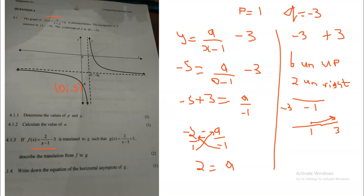Now for 4.1.4: write down the equation of the asymptote of g. Remember g is the new translated graph. The horizontal asymptote — you check the equation: it's x minus three here, so x equals three. In other words, x minus three equals zero gives x equals three. That is your asymptote. If they were asking about the vertical asymptote, y would also equal three. So x equals three because if p is positive you put a minus after x.